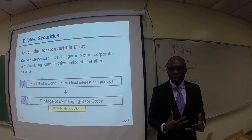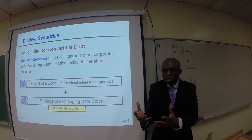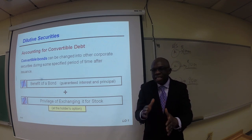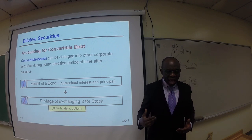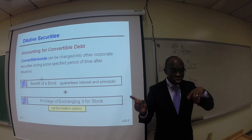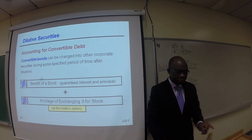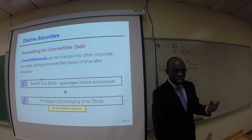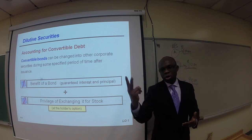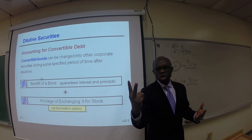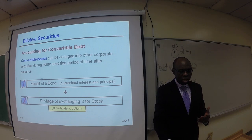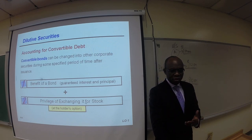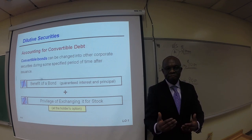Here are the benefits to the bondholder. If you buy a convertible debt bond, that bond has a feature allowing you to convert it to common stock when the time is right for your benefit. It guarantees interest and principal for the bondholder, and it also gives you the privilege of exchanging the bond for stock. Those are the two primary benefits for the bondholder.